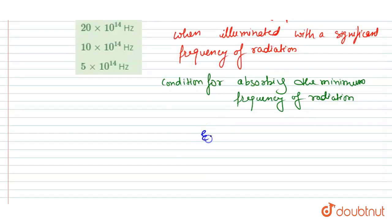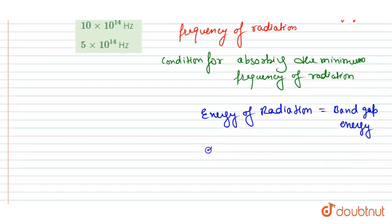Energy of radiation - that is Planck's constant times frequency - should be equal to band gap energy. Very simple. Energy of radiation is Planck's constant times frequency, and band gap energy...